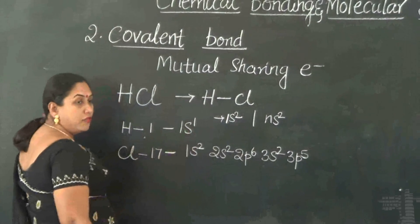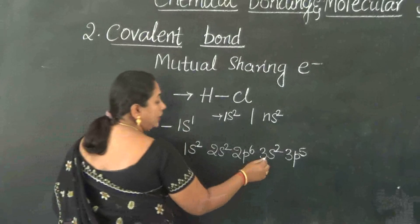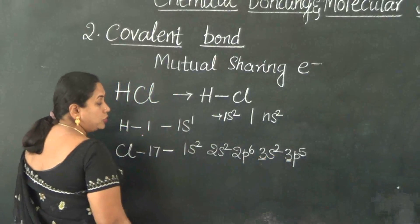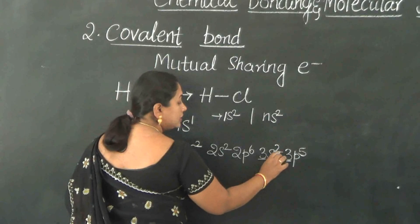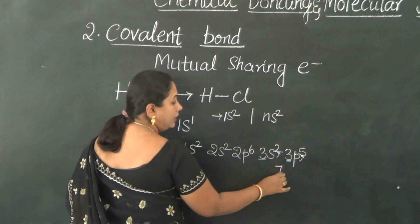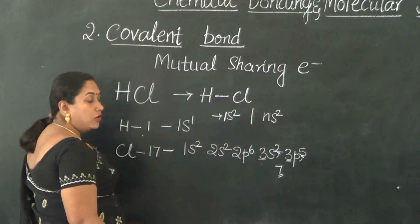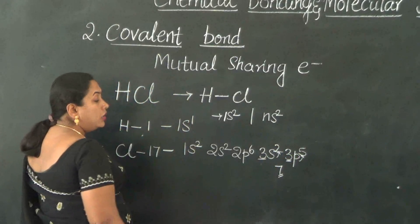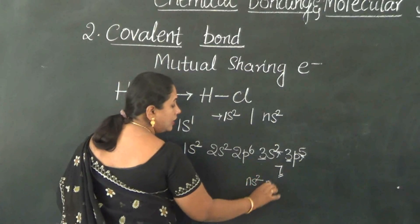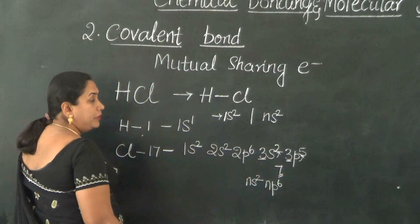Now let us look at the case of the chlorine atom. The third shell is its valence shell, and in that shell it contains 3s2 and 3p5 — that means 7 electrons. So chlorine is running short of just 1 electron to achieve a stable octet configuration of ns2 np6.